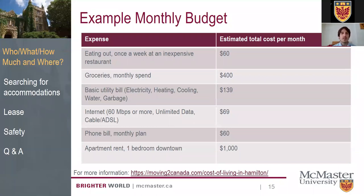One cost you can't split and that surprises many newcomers is phone plans. Canada has some of the most expensive phone plans in the world — particularly data. In some countries you can get unlimited data for $10-12 a month, but here, one gigabyte might cost $50-60 per month, and eight gigabytes could be $100-150 per month. However, keep in mind that campus has great Wi-Fi, your house will have Wi-Fi, and most restaurants and coffee shops do too, so you may not need as much data as you currently use.